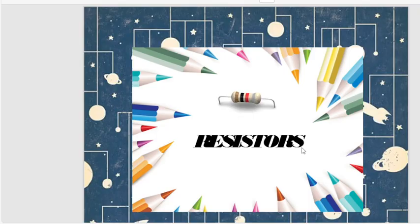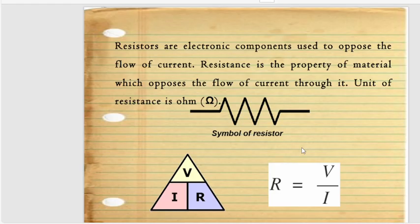First we talk about resistors in detail. Resistors, as you know, are the electronic components that are used to oppose the flow of current or to control the flow of current. Resistance is basically the property of a material which opposes the flow of current. The unit of resistance is ohm. Here we have the symbol of resistors and the mathematical form of resistance, which is R = V/I — this is Ohm's Law.